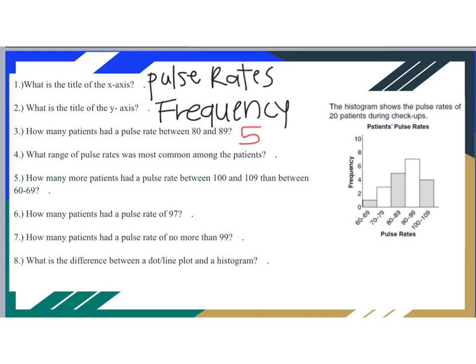What range of pulse rates was the most common among patients? For this one, you look to see which bar in the histogram is the highest and has the highest frequency. That would be 7, and that's the 90 to 99 pulse rate range. So 90 to 99 was the most common.